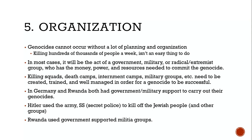The next stage is organization. Genocides can't occur without a lot of planning. If you are going to kill a hundred thousand people in a week, this is not easy. In most cases, it's going to be the act of a government, military, or radical extremist group with the money, power, and resources needed. Killing squads, death camps, internment camps, and military groups have to be trained and well-managed. Germany and Rwanda both had government military support — Hitler used the SS, Rwanda used government-supported militia groups called the Interahamwe.